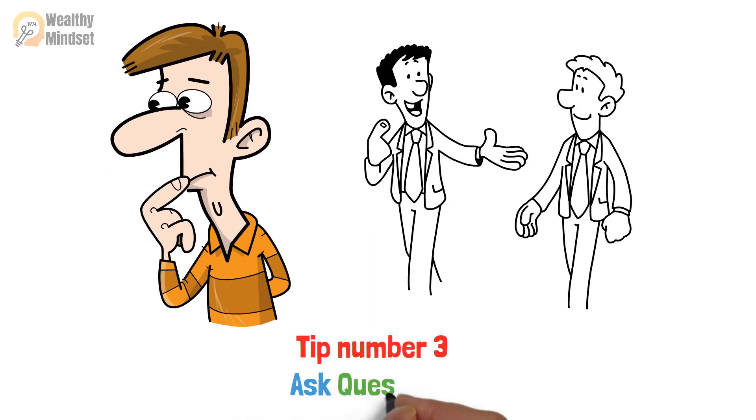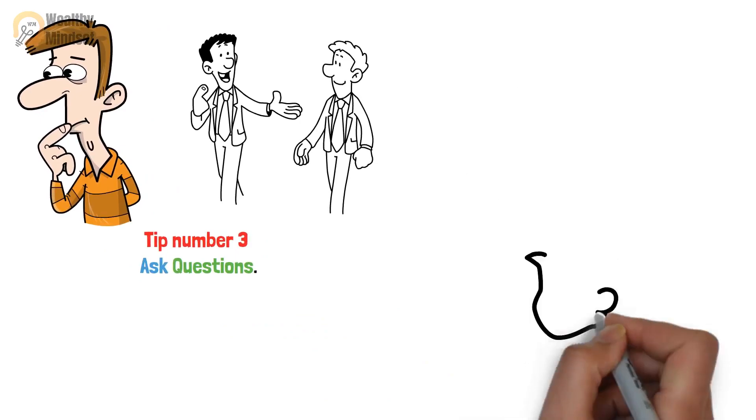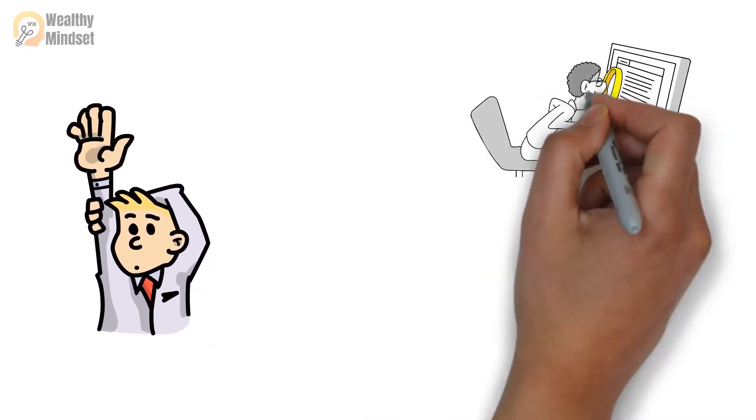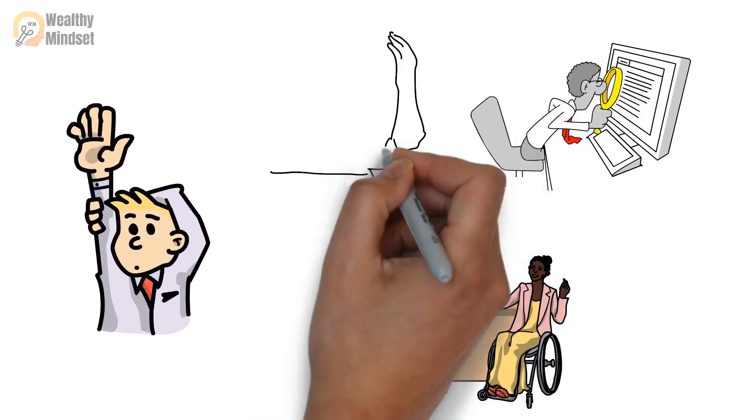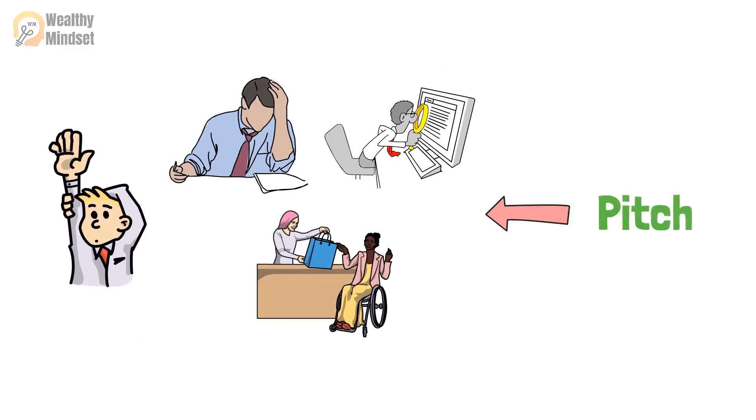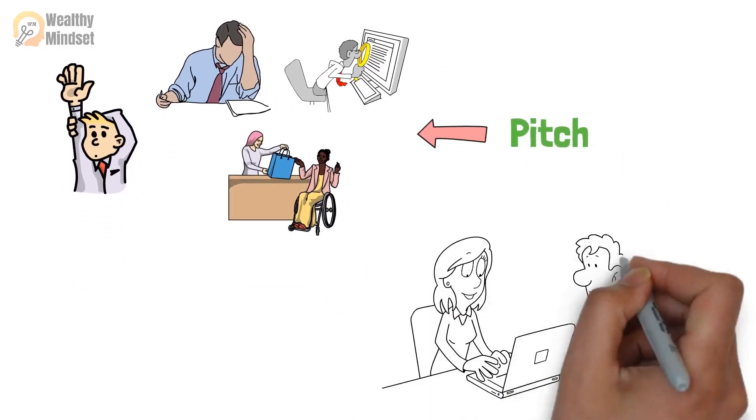Tip number three, ask questions. Asking questions is a critical part of the sales process. You need to understand your potential customers' needs, preferences, and pain points. This will help you tailor your pitch to their specific situation and offer a solution that addresses their concerns.